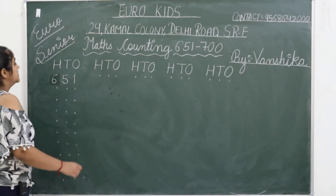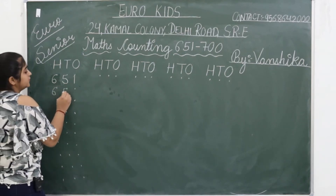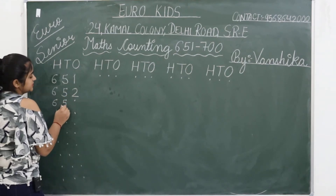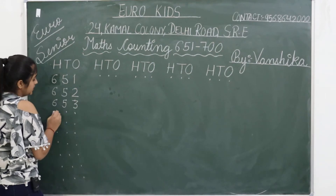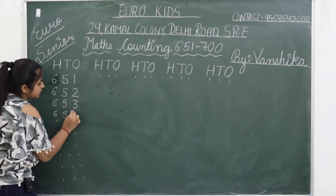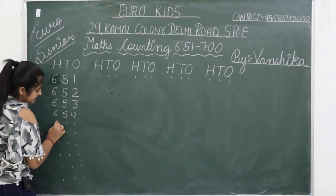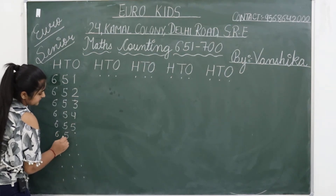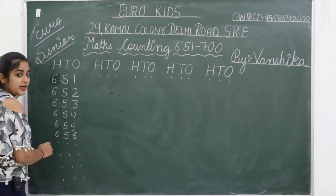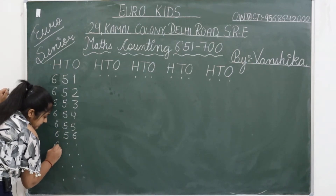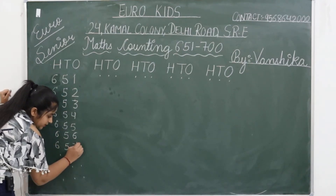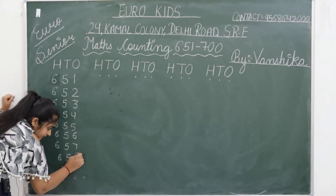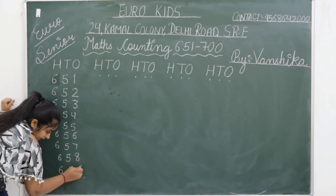Next is 652. 653. 654. 655. 656. Are you all writing with me? 657. 658. 659.